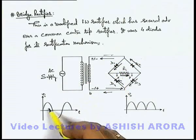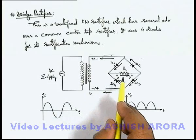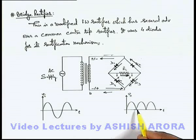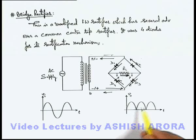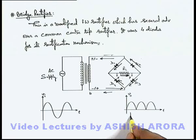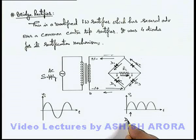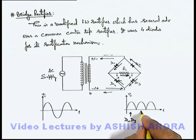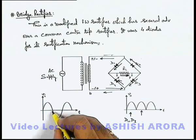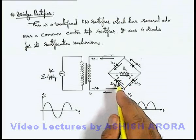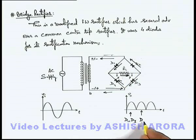So we can see that in both half cycles, the current flowing through the load resistance is in the same direction. That's why the output graph is the same as what we get in a center tap rectifier — a normal full wave rectified output. The first half cycle corresponds to the forward biasing of diodes D1 and D3, and the second half cycle corresponds to the forward biasing of diodes D2 and D4. The next half cycle again corresponds to D1 and D3 being forward biased.